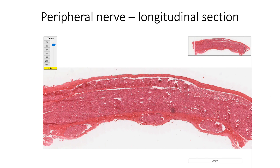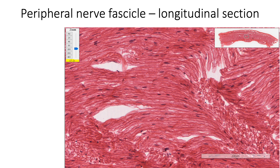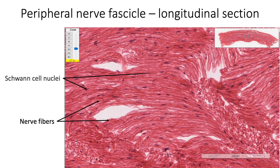This is a longitudinal section of the peripheral nerve showing epineurium and perineurium and fascicles of longitudinally running nerve fibers. A longitudinal section of a peripheral nerve fascicle in a magnified view shows multiple longitudinally running nerve fibers and nuclei of Schwann cells.